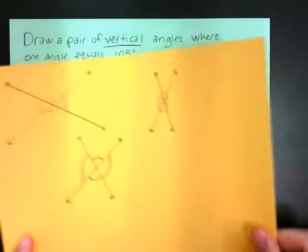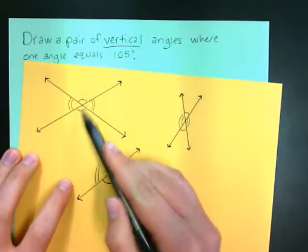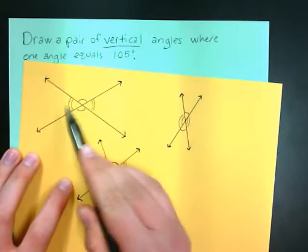Now if you remember what vertical angles are, they look something like this, where the angles that are opposite from each other when two lines cross are equal.